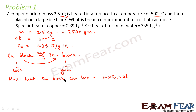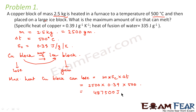This is the amount of heat it can lose because this is the heat that it would have gained when it was heated in the furnace. So this will be equal to 2500 into 0.39 into 500, which equals 487,500 joules. This much amount of heat the copper block can lose, and that is the amount of heat gained by the ice block.